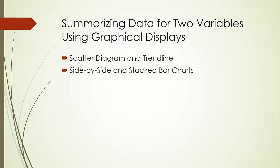Graphical display is very powerful for recognizing patterns and trends in the relationship between two variables. A scatter diagram or scatter plot is a graphic display of the relationship between two quantitative variables — one variable is shown on the horizontal axis and the other on the vertical axis. More often than not, a trend line providing an approximation of the relationship between two variables is added to the scatter diagram. A side-by-side bar chart is a graphic display for depicting multiple bar charts on the same display. A stacked bar chart is a bar chart in which each bar is broken into rectangular segments of different colors, showing the relative frequency of each class, similar to a pie chart. Please take a look at the examples of all these diagrams in the textbook.